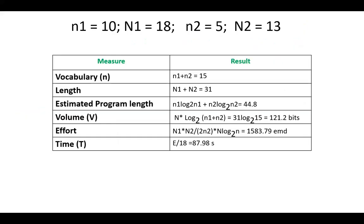Now having the basic measures, small n1, small n2, capital N1, capital N2, we can compute different measures. For example, the vocabulary n equals n1 plus n2, 10 plus 5, 15.